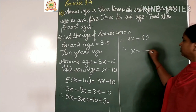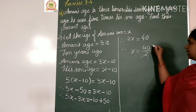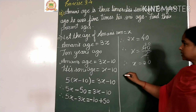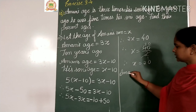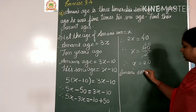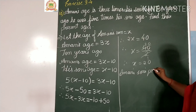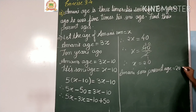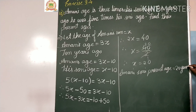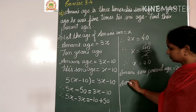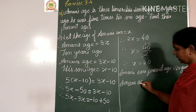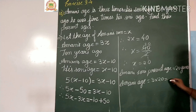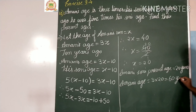Therefore x equals 40 divided by 2, which gives x equals 20. So Aman's son's present age is 20 years. Aman's age equals 3 into 20, which equals 60 years.